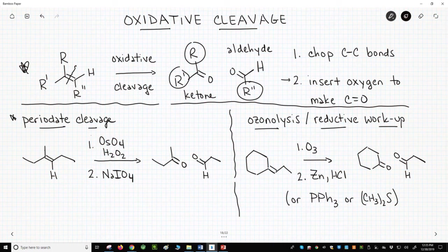So we first perform a syn-dihydroxylation with reagents such as osmium tetroxide and hydrogen peroxide, and then treat that diol with sodium periodate. This transformation gives two products. The left half of the alkene gives a ketone, and the right half of the alkene gives an aldehyde.